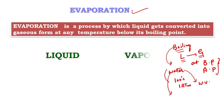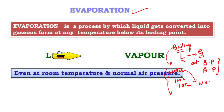The liquid form changes into the vapor form even at room temperature and normal air pressure. Boiling point and atmospheric pressure are not necessary. Below the boiling point, at any temperature and normal air pressure conditions, when liquid form converts into vapor form, we call it evaporation.